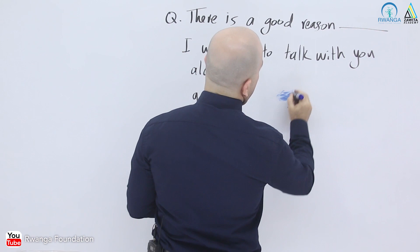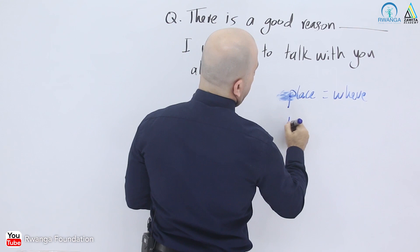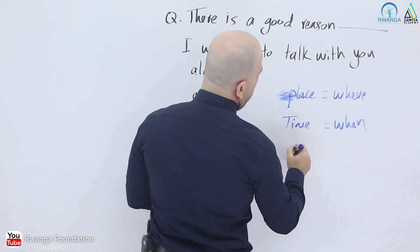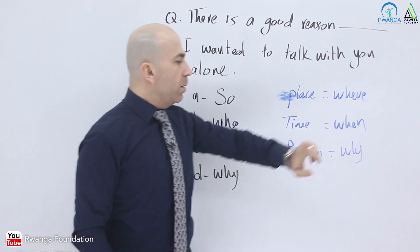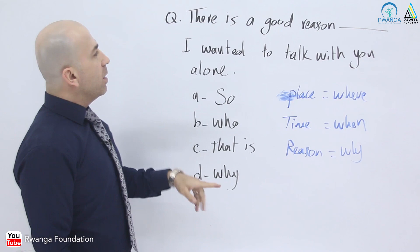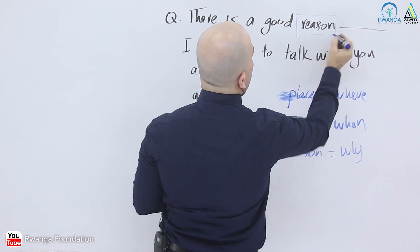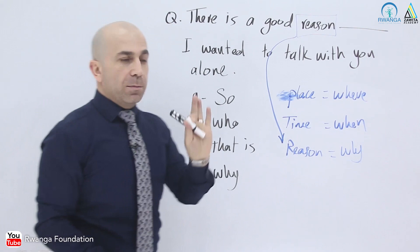To summarize: place corresponds to 'where,' time corresponds to 'when,' and reason corresponds to 'why.' A reason takes 'why.'